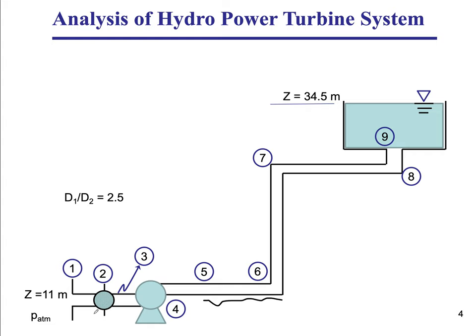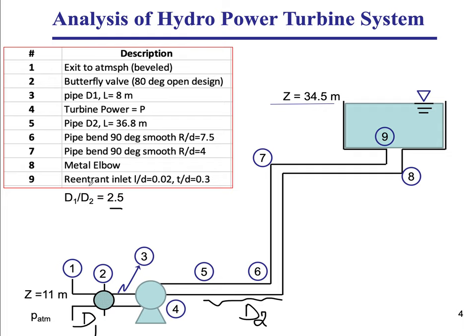We have a pipe of diameter D2, and the outlet pipe is larger: D1. The ratio D1 over D2 is 2.5, so the pipe coming out of the turbine is larger than the pipe coming into the turbine by a factor of 2.5 in diameter.